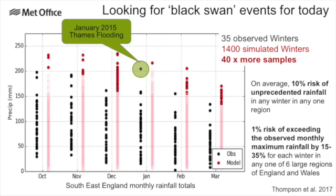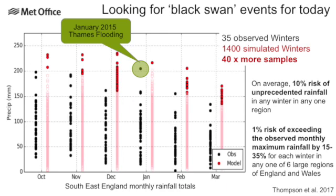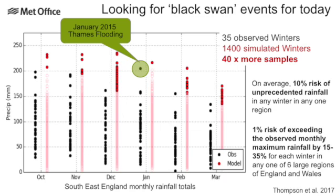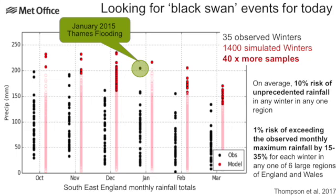We used this concept to look for black swan events for today, as part of work for the National Flood Resilience Review. For each month of winter — October to March — we have two distributions of dots. The black ones are from observations: 35 winters considered representative of the current state of the climate with the current forcing from greenhouse gases. We need to make sure we're looking at something relevant for today.